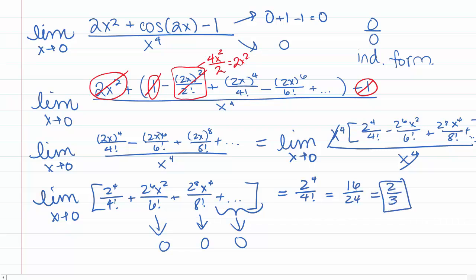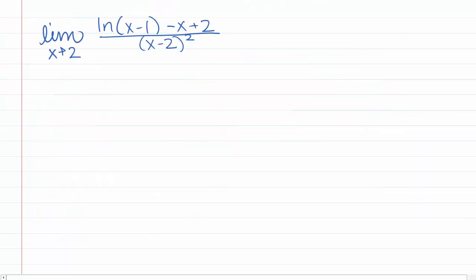This gives us a way of finding a complicated-looking limit and provides intuition about what power of x the numerator and denominator act like. Let's try another limit example: the limit as x goes to 2 of [ln(x-1) - x + 2] / (x-2)².